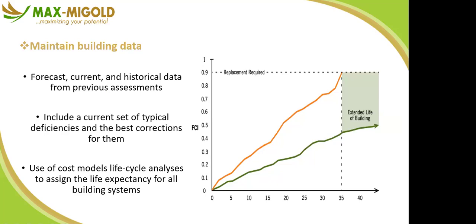When you use cost model lifecycle analysis, for example, if an estate was built in a given year and is expected to last 100 years, and from the date of commissioning it has already been 80 years, you can easily forecast that in the next 20 years this building will give way. You can start making capital plans on either giving it a facelift or demolishing and reconstructing fresh.